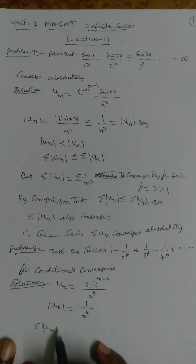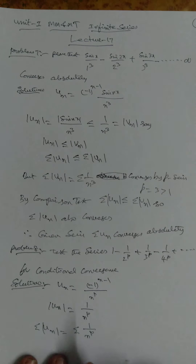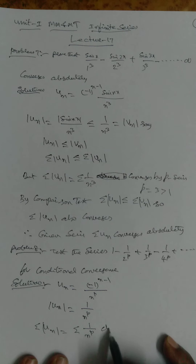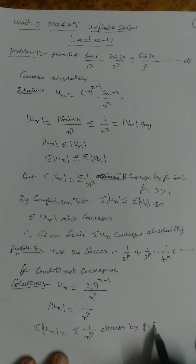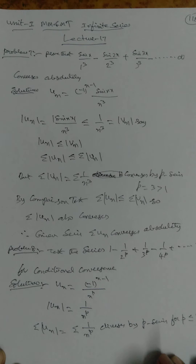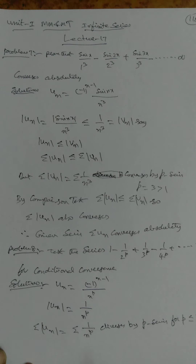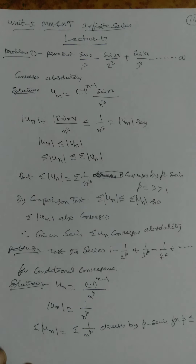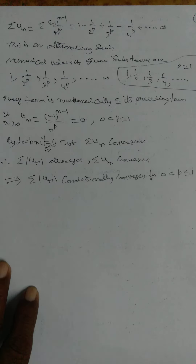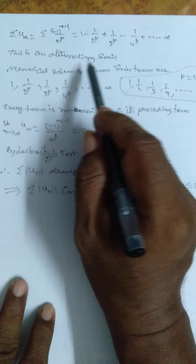So σ|u_n| = σ(1/n^p). For conditional convergence, σ|u_n| should diverge. This diverges by p-series for p ≤ 1. Now we have to find about σu_n. σu_n = σ(-1)^(n-1) / n^p. Giving values to n, we get this alternating series.